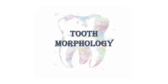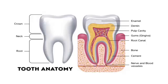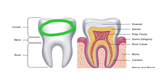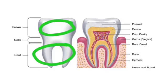In order to understand detailed tooth morphology, at first we need to know the basic structure of tooth. Each tooth has a crown portion and a root portion. The crown portion can be seen easily in the oral cavity, but the root portion is covered and firmly attached to the tooth socket and cannot be seen in the oral cavity.